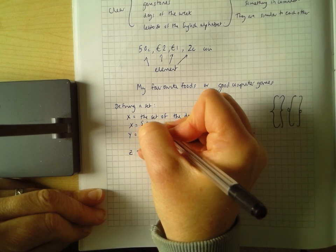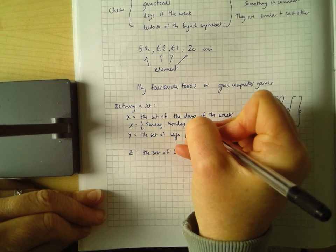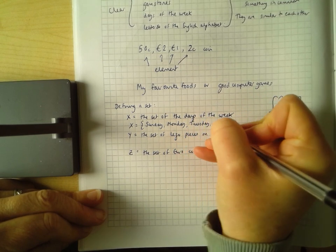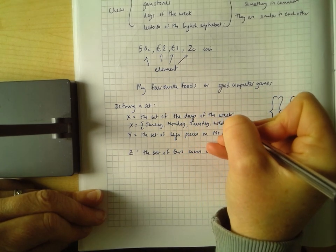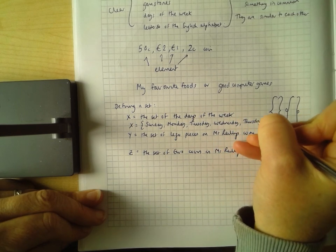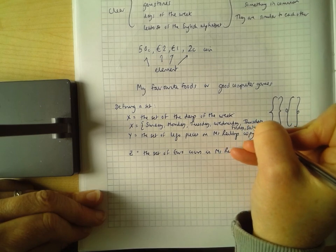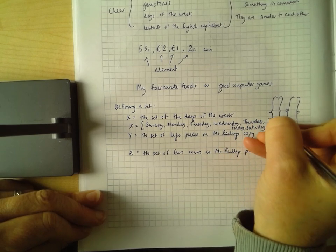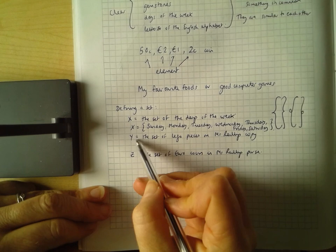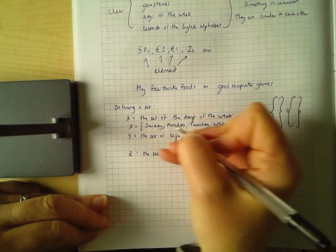Sunday, Monday, Tuesday, Wednesday, Thursday. Oops, I'm running out of space now. Friday, Saturday. Now, if you notice, I start with a bracket, a curly bracket, and I end with a curly bracket, and I put a little comma between each element.